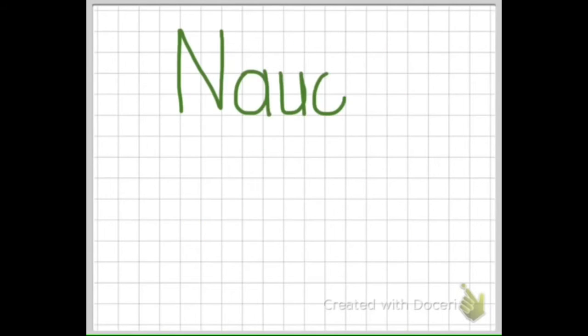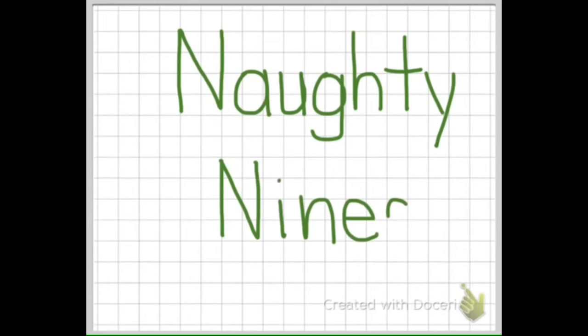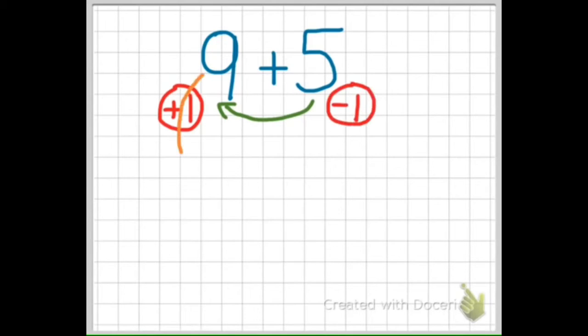The last addition strategy is sort of funny because it has a silly name. The last strategy is called naughty 9s. Now the word naughty means to be bad. So we're going to try to make a picture in your brain for how to solve basic addition facts with 9. In naughty 9s, the bad number 9 steals one from the other addend in the number sentence.